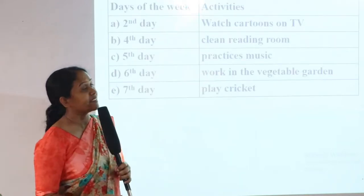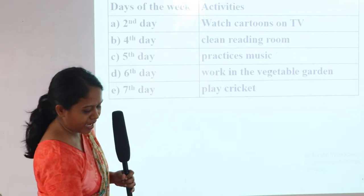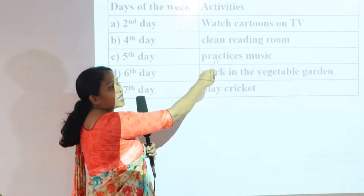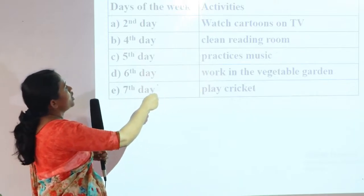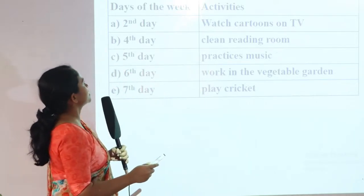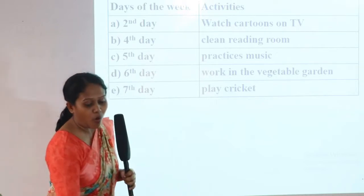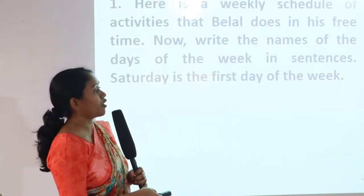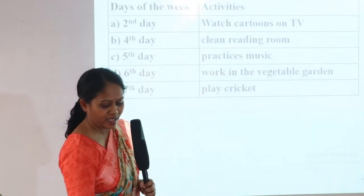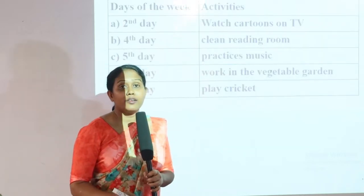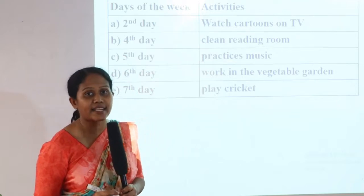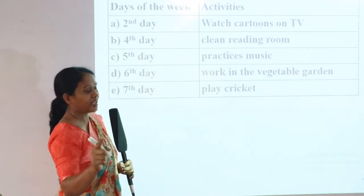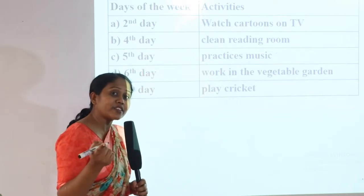This table shows the days of the week in the first column and activities in the second column. These are the ordinal numbers. We already know that the first day of the week is Saturday, so obviously the second day is Sunday. Now let's see how we can start our writing.